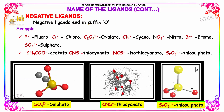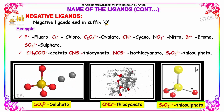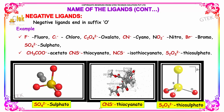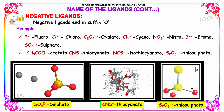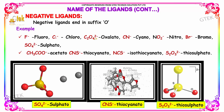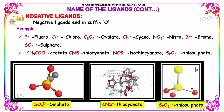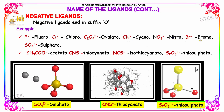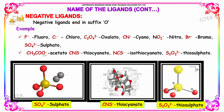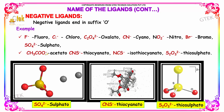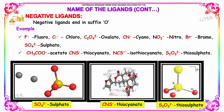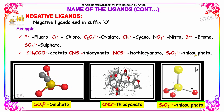Negative ligands have the suffix '-o'. Examples include sulfato, thiocyanato, thiosulfato, fluoro, chloro, oxalato, cyano, nitro, bromo, and aceto. Also isothiocyanato and thiosulfato are included among the negative ligands.